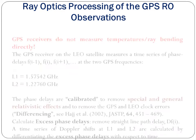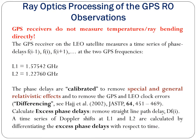The ray optics processing of GPS-based RO observations does not measure temperatures or ray bending directly. The GPS receiver on the LEO satellite measures a time series of phase delays f(i-1), f(i), f(i+1) at the two GPS frequencies, L1 and L2. The phase delays are calibrated to remove special and general relativistic effects and GPS and LEO clock errors. The differencing method given by Hajj et al. in 2002 calculates the excess phase delays and removes straight-line paths, giving a function d of f(i). A time series of Doppler shifts at L1 and L2 can then be calculated by differentiating the excess phase delays with respect to time.